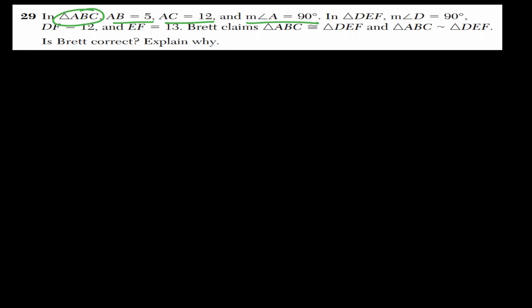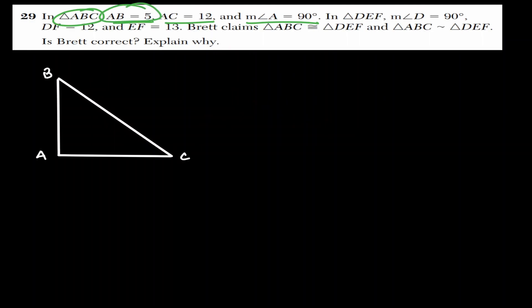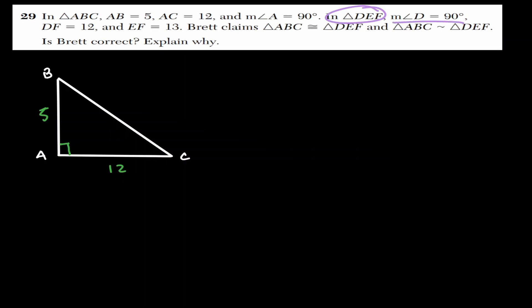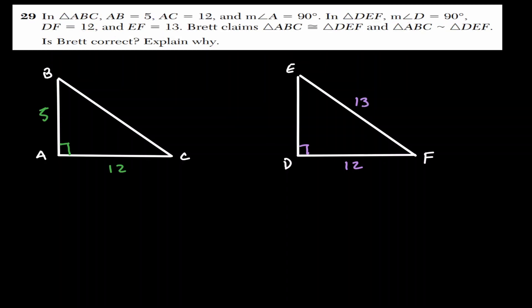In question 29, we have triangle ABC with AB equal to 5, AC equal to 12, and angle A equal to 90 degrees. We also have another triangle where angle D is 90 degrees, DF is 12, and EF is 13. There's a claim that these two triangles are congruent and similar. Let's apply the Pythagorean theorem to find the missing sides.